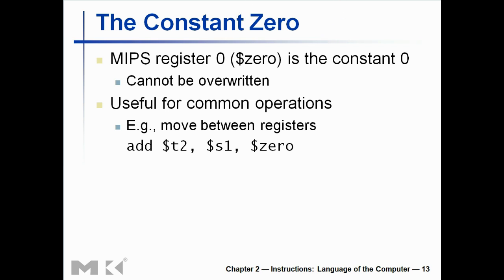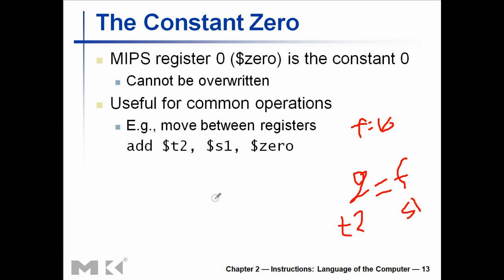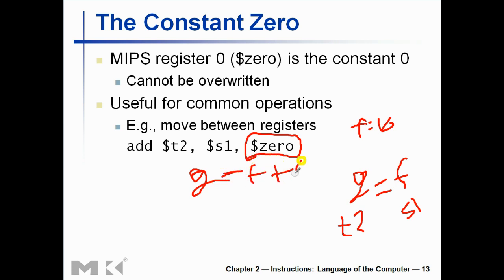This is a way to move values between registers. Suppose you have something on F and you want to put it on G — so G equals F. There is no addition here. If this is t2 and this is s1, what do I write as the third operand? If I write s1, s1, both will be added. If I write nothing, that's invalid. That's when I use zero — so it's more like G equal to F plus 0, which is the same as G equal to F.